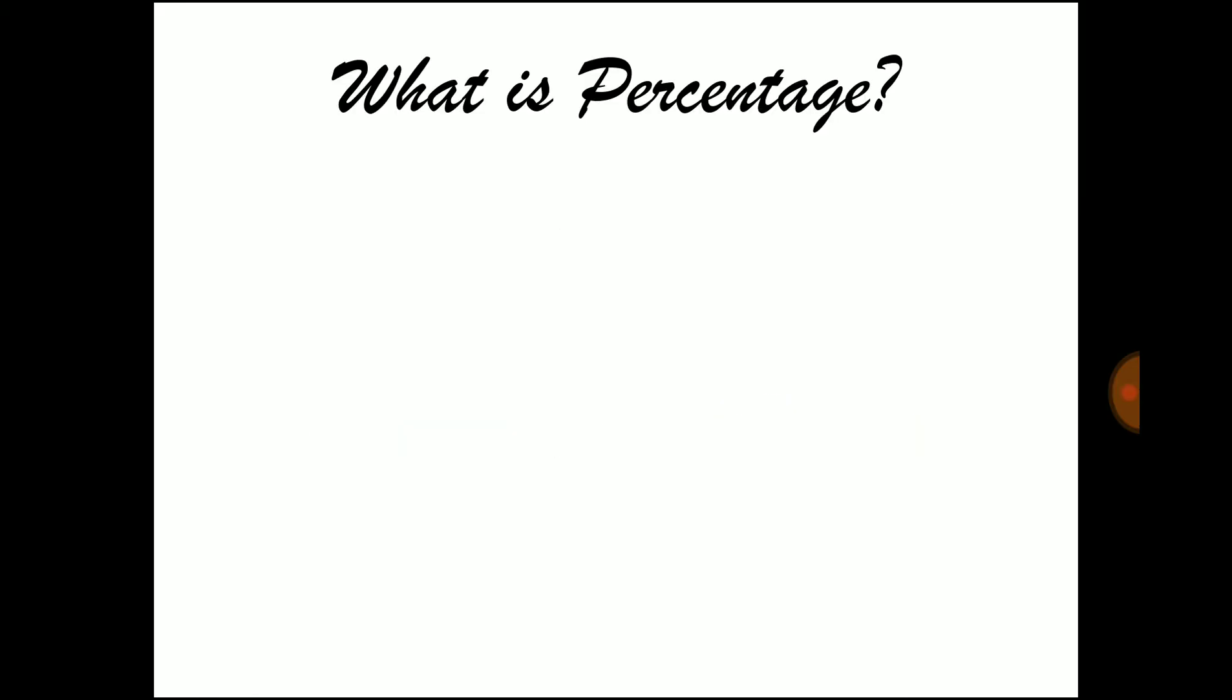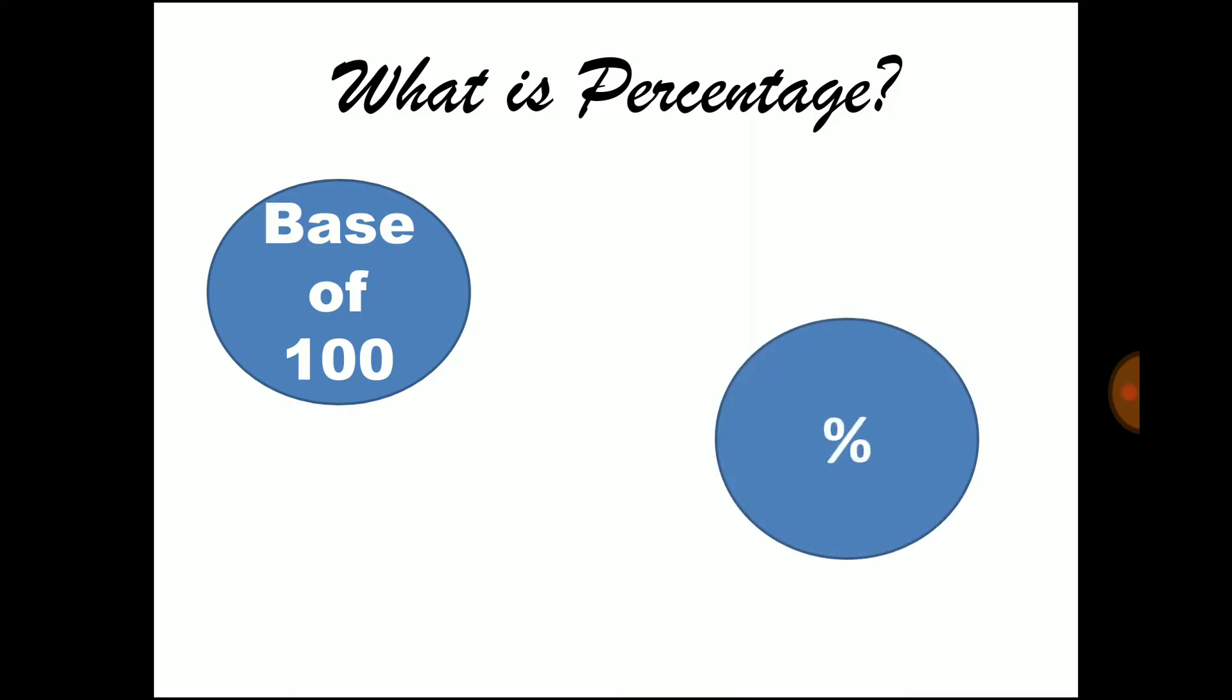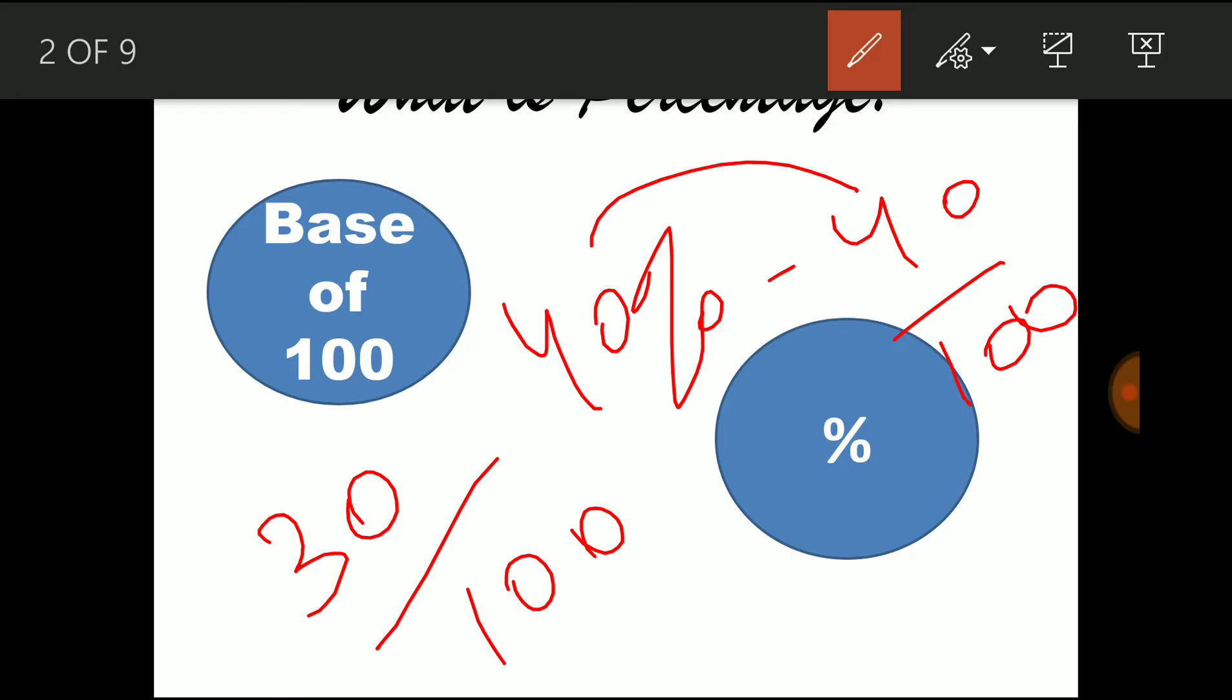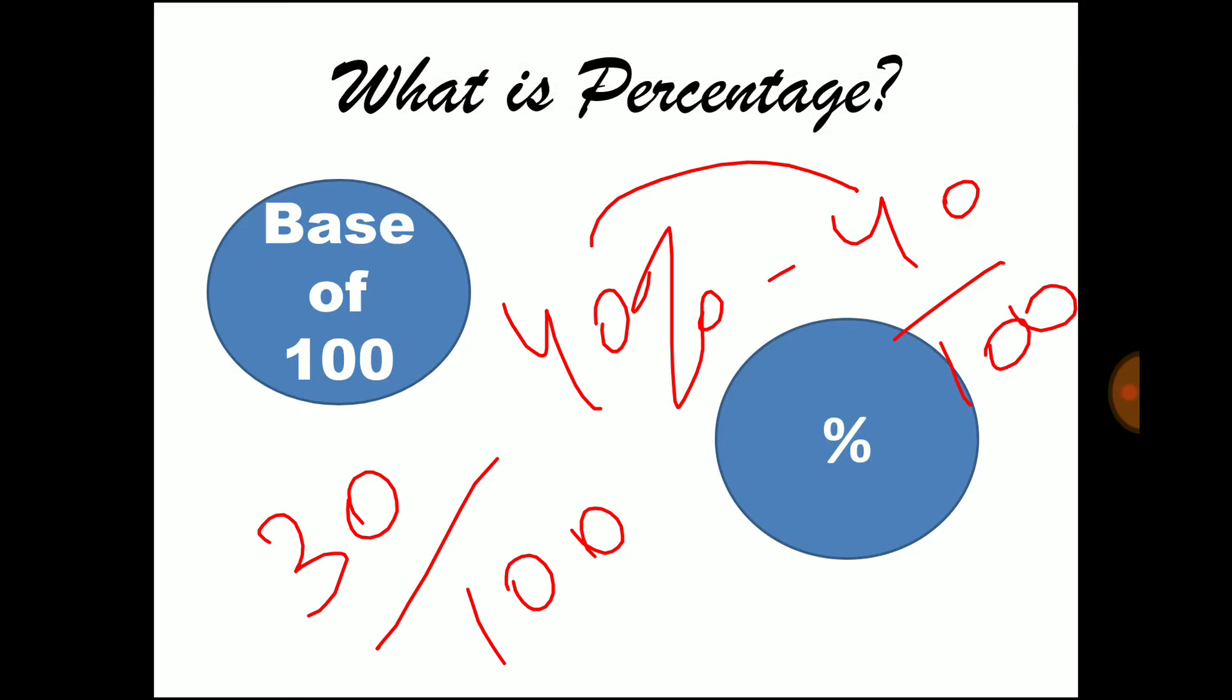What is percentage? Any value expressed on the base of 100 or over a base of 100 is called percentage and is represented as modulus. Cent represents the base of 100. For example, if it is 30% we can write it as 30 by 100. 40% means 40 to the base of 100. So both are equal. 2.5% means 2.5 by 100.